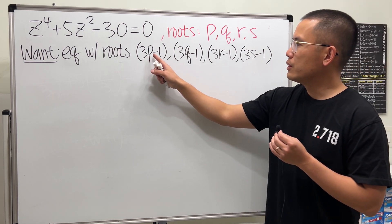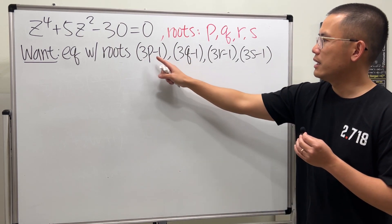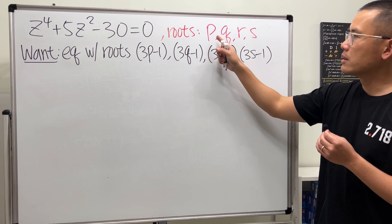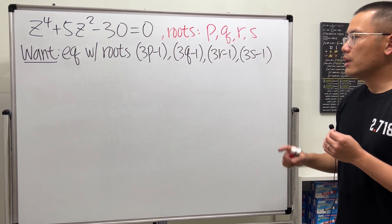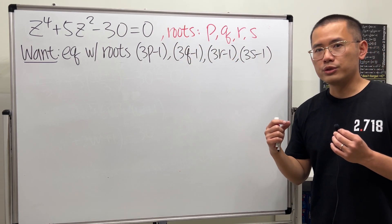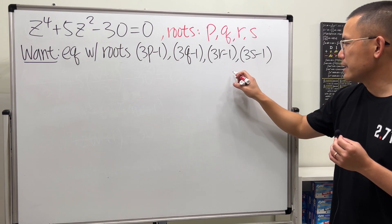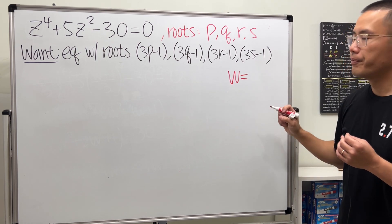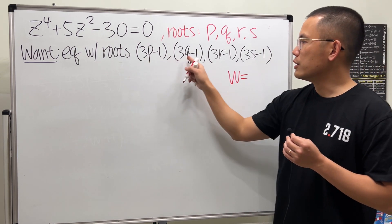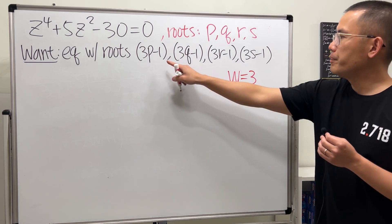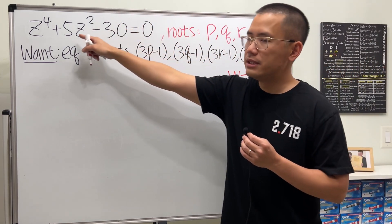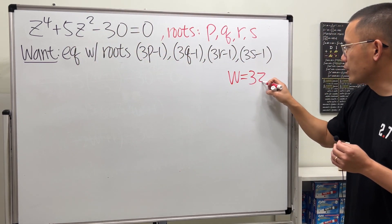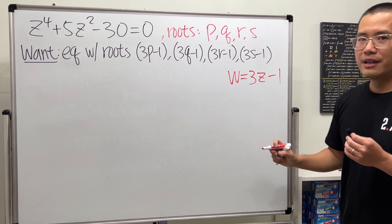So, what's the connection between the new equation with these roots and the original? Well, it's 3 times r minus 1, right? And then these are from the original roots. For the new equation, they want us to use w. So I'm going to start off by saying w is equal to... well, it's the 3, and then p, q, r, s are from z. So I'm going to put down z right here, and then minus 1. That's the connection.